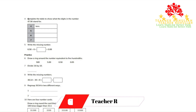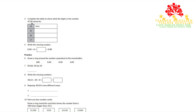In question 4 it says, complete the table to show what the digits in the number 47.56 stand for. The first one is done for us. So 4 stands for tens, because to the left of the decimal point the first one is ones and the second one is tens.